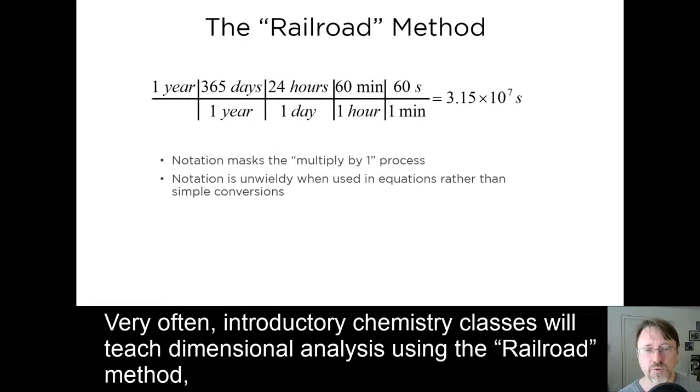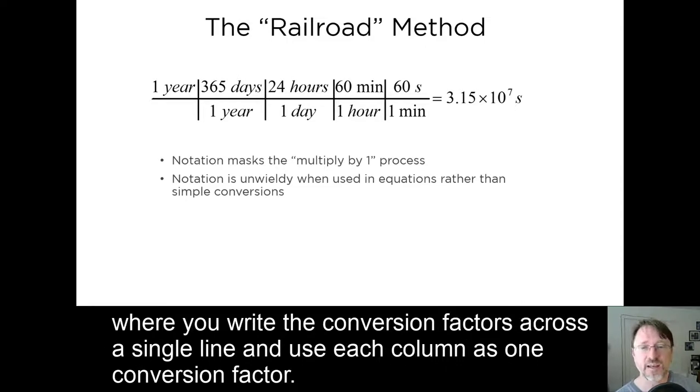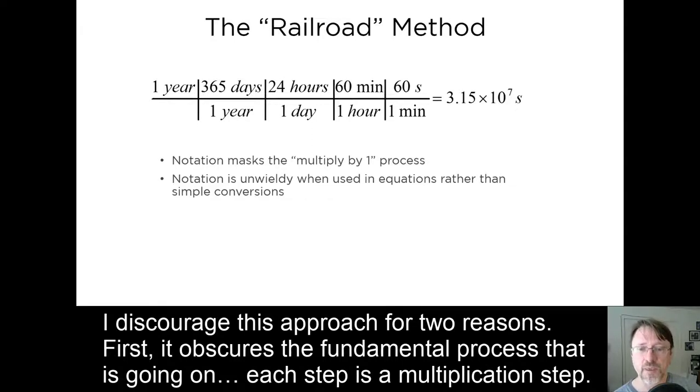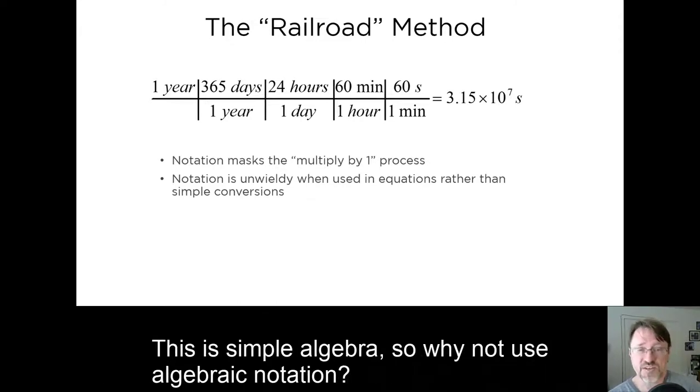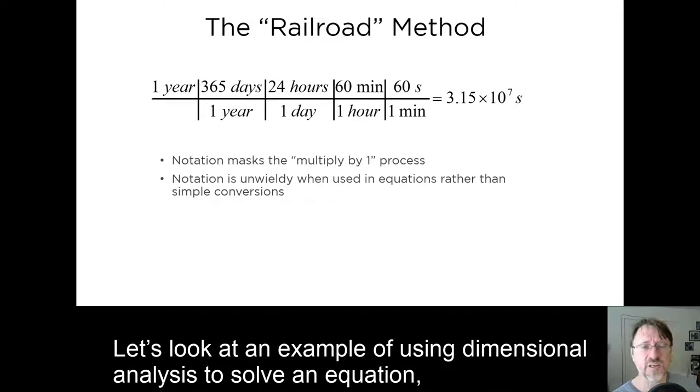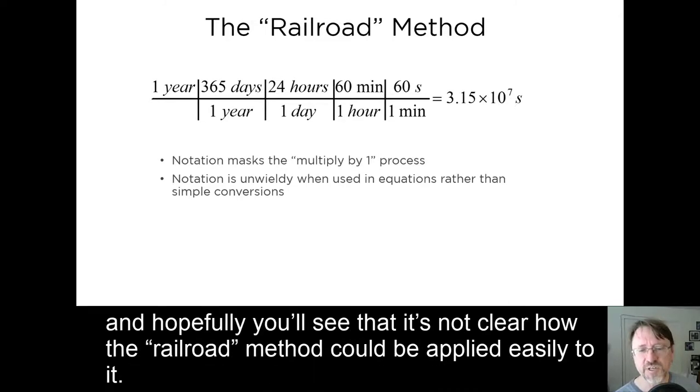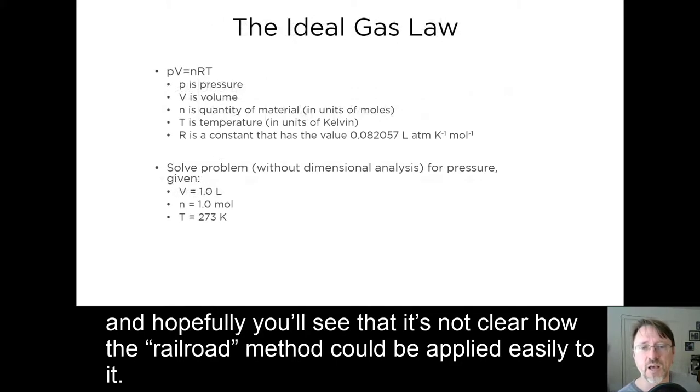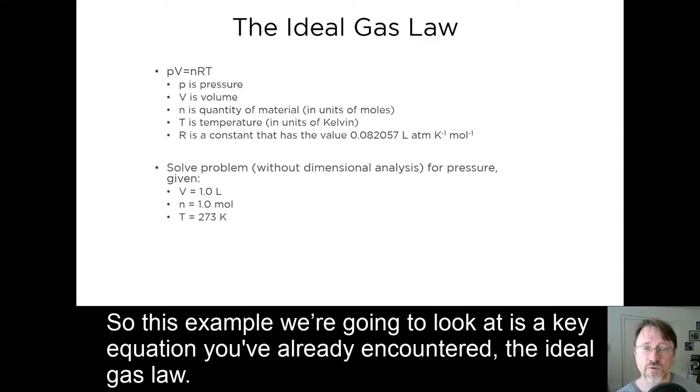Very often, introductory chemistry classes will teach dimensional analysis using the railroad method, where you write the conversion factor across a single line and use each column as one conversion factor. I discourage this approach for two reasons. First, it obscures the fundamental process that's going on. Each step is a multiplication step. This is simple algebra, so why not use algebraic notation? Second, the notation is very difficult to use in a situation where you are solving an equation rather than simply doing a conversion. Let's look at an example of using dimensional analysis to solve an equation, and hopefully you'll see that it's not clear how the railroad method could be applied easily to it.